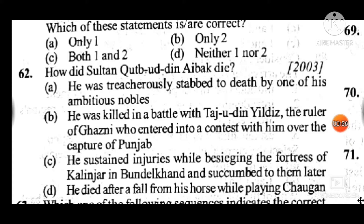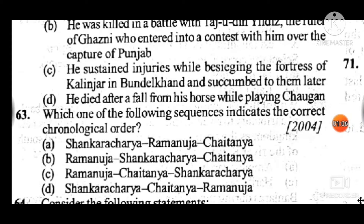Question 62: How did Sultan Qutbuddin Aibak die? Answer is D: he died after a fall from his horse while playing Chaugan. Question 63: Which one of the following sequences indicates the correct chronological order? Answer to question 63 is A: Shankaracharya, Ramanuja, Chaitanya.